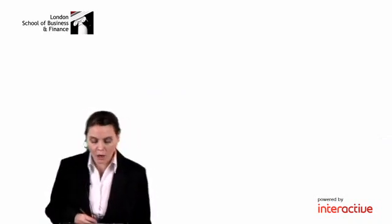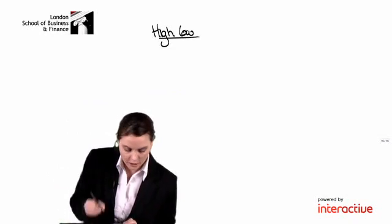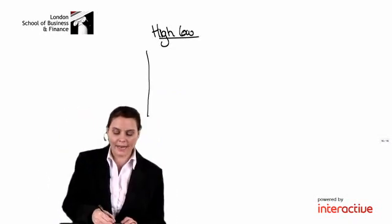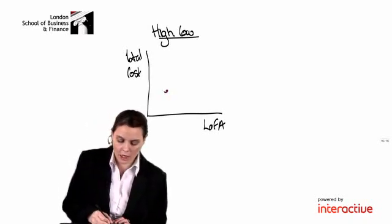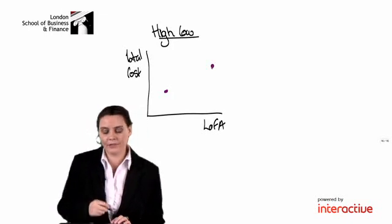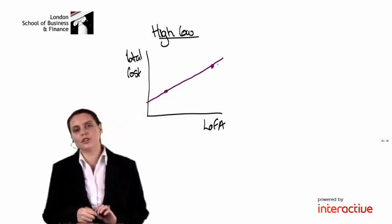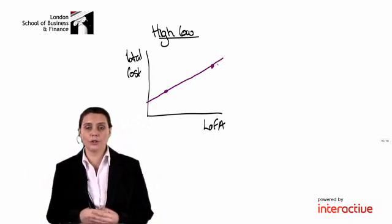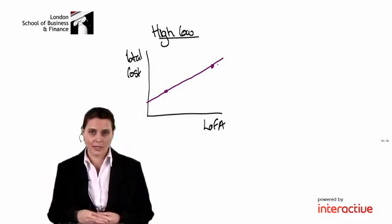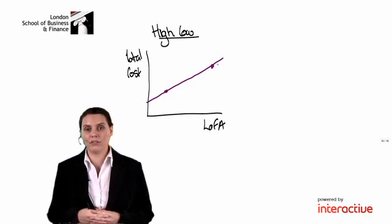Just a reminder then of what we do under each technique. So if we're applying the high-low method to understand the relationship between our level of activity and our total cost, then what do we do? We look at a low level of activity and a high level of activity. We assume a linear relationship between these two levels of activity. And we establish the line that goes through the high and the low levels of activity. And we assume that this line represents our total cost at any other level of activity.